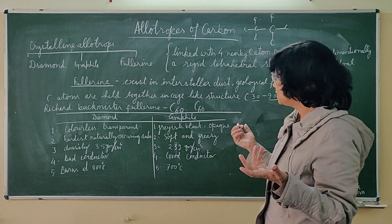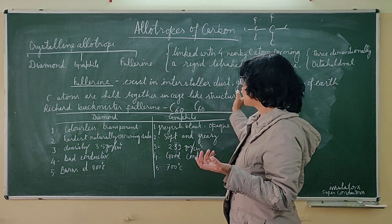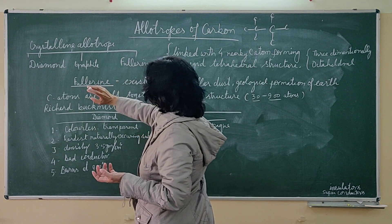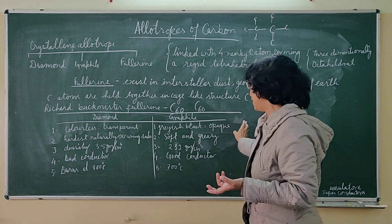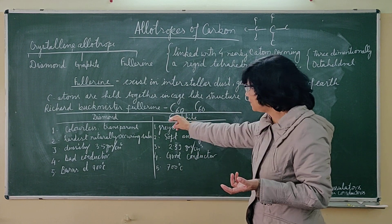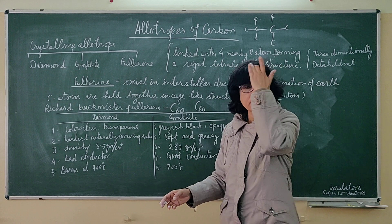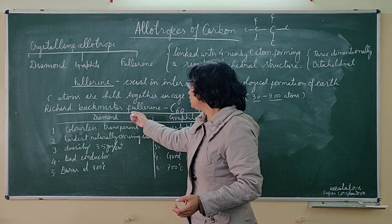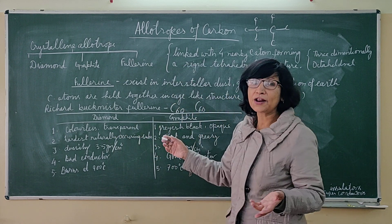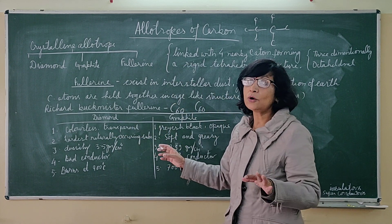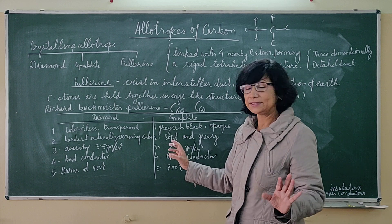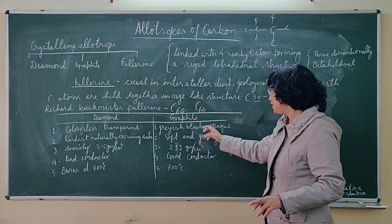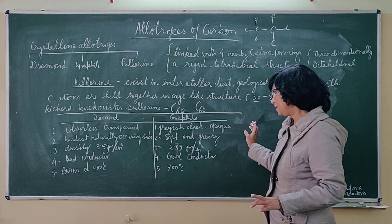So let us compare the other two crystalline forms of carbon — diamond and graphite. These properties of diamond and graphite are both important to understand and remember. First, appearance: diamond is colorless and transparent, whereas graphite is grayish-black and opaque — it is not transparent.